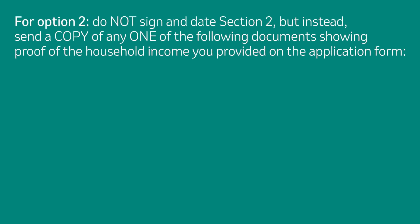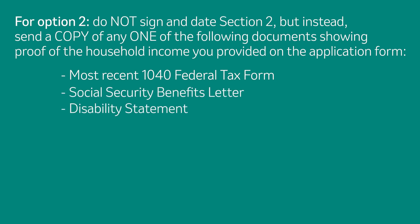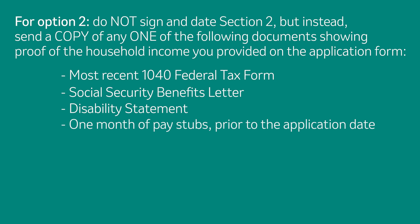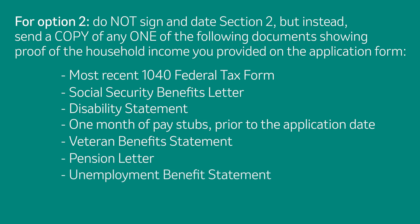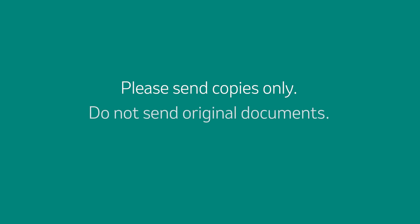Alternately, you can choose Option 2 for income verification. For Option 2, do not sign and date Section 2, but instead send a copy of any one of the following documents showing proof of the household income you provided on the application form: most recent 1040 Federal Tax Form, Social Security Benefits Letter, Disability Statement, one month of pay stubs prior to the application date, Veteran Benefits Statement, Pension Letter, Unemployment Benefits Statement, or Letter from an Employer. Please send copies only — do not send original documents.